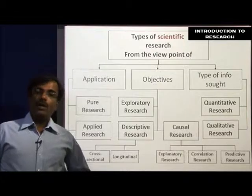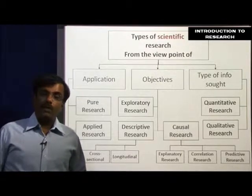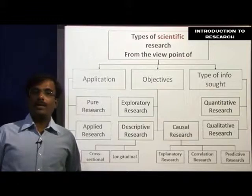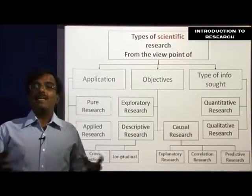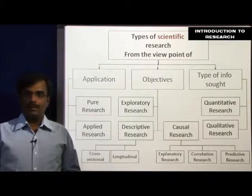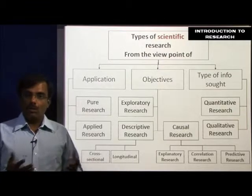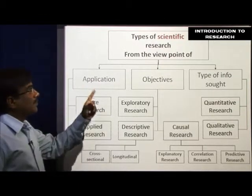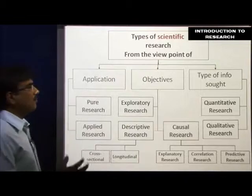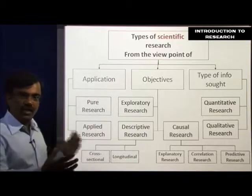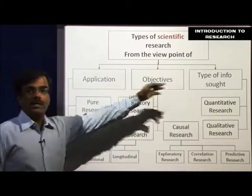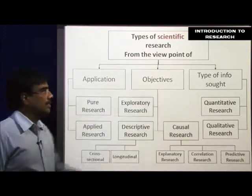Any process that involves data-oriented decision making is scientific, as opposed to hunches. So let us look at types of scientific research methods from the viewpoint of three areas: application, objective, and type of information sought.